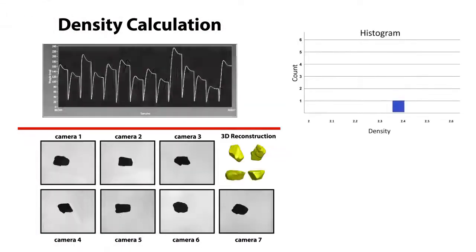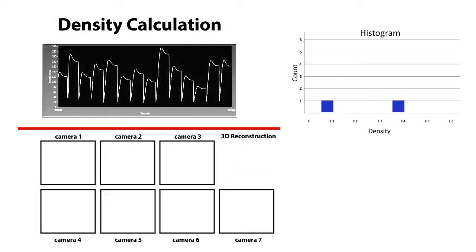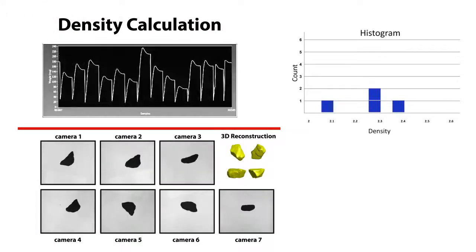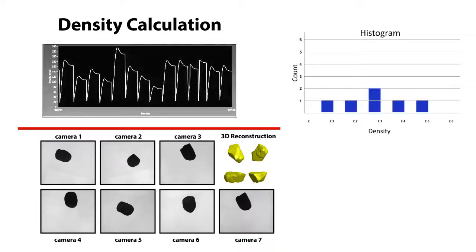The measurement process provides the mass and volume of a particle whose ratio is simply the density from which a density histogram can be populated.